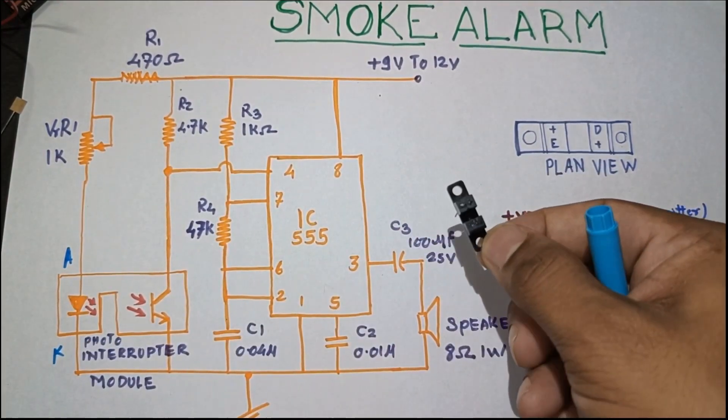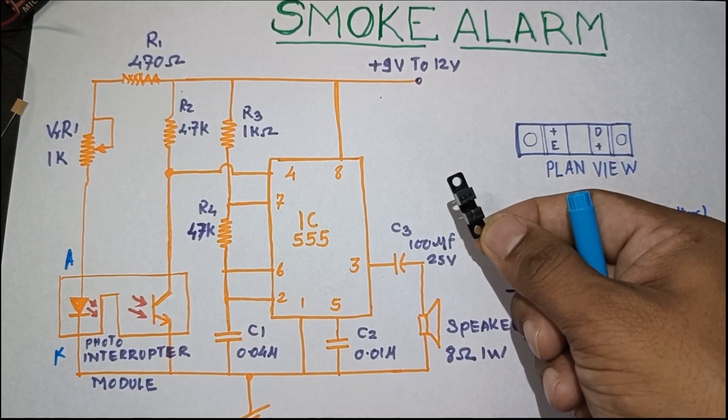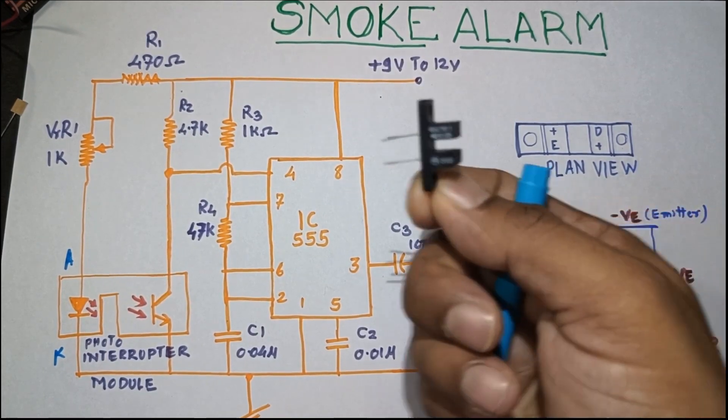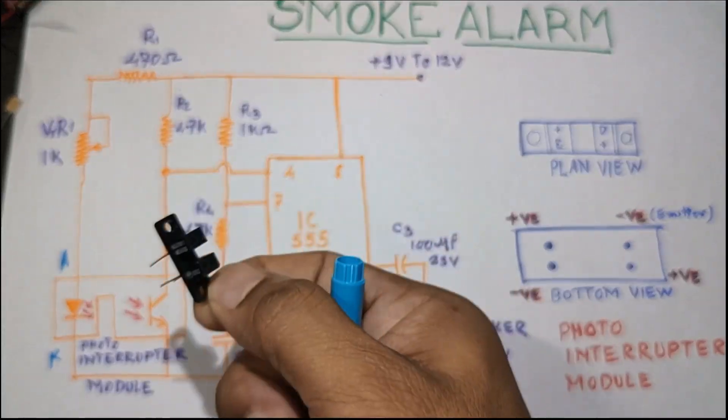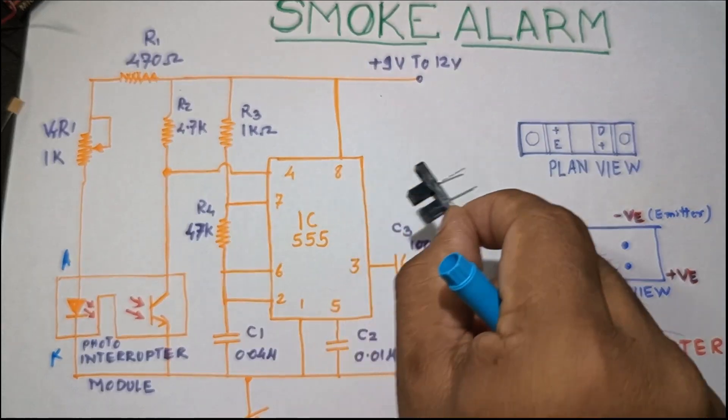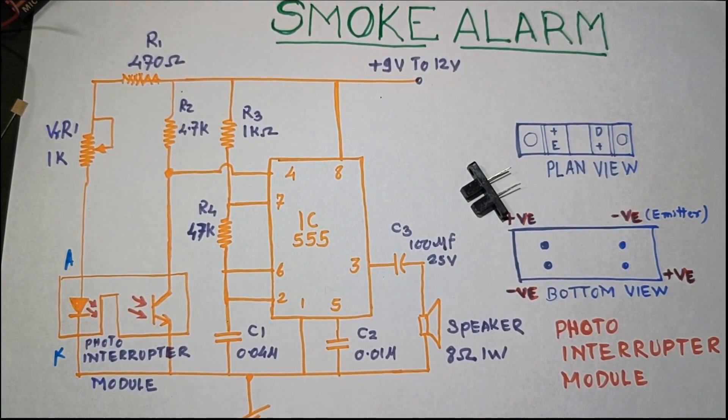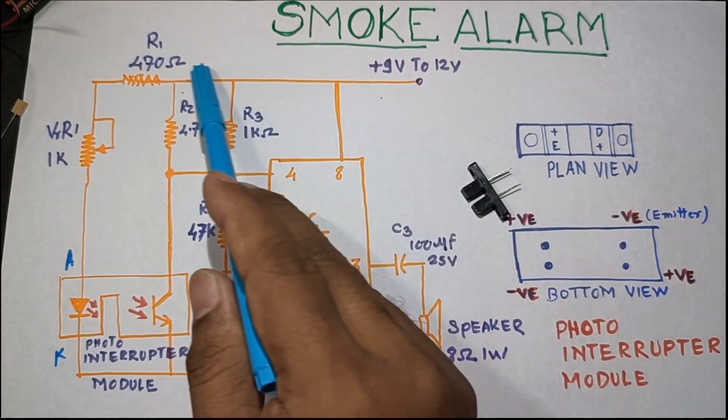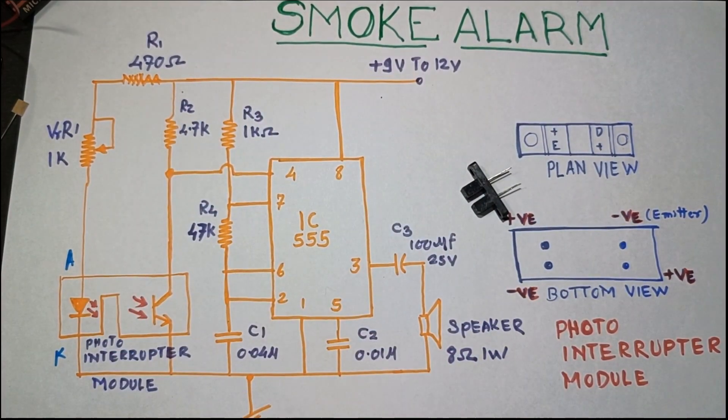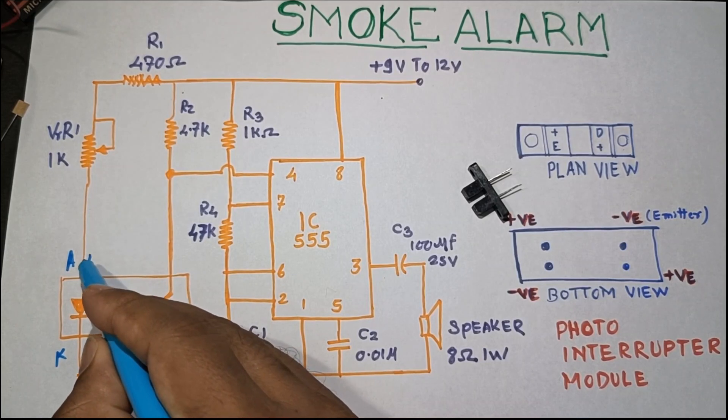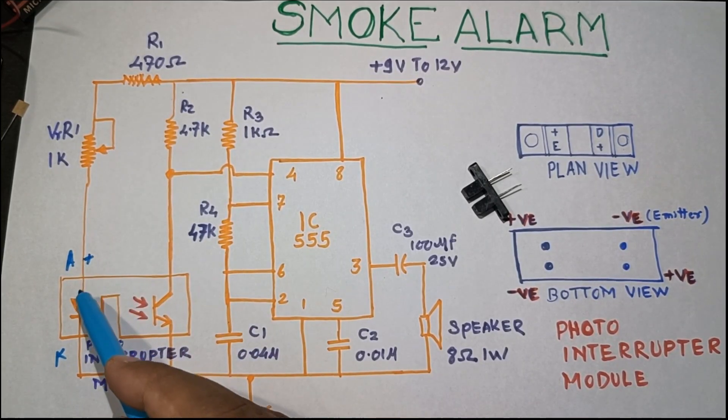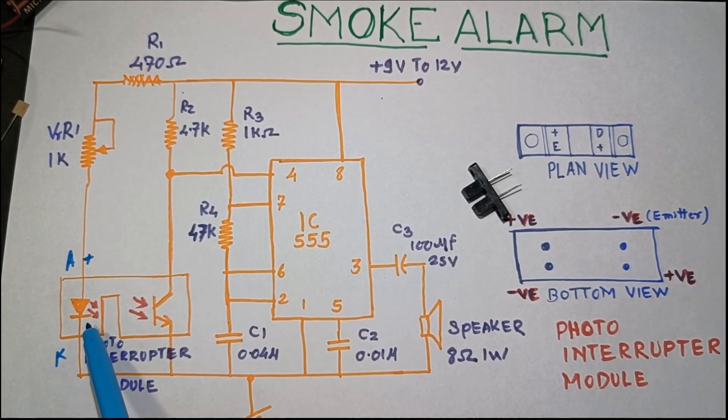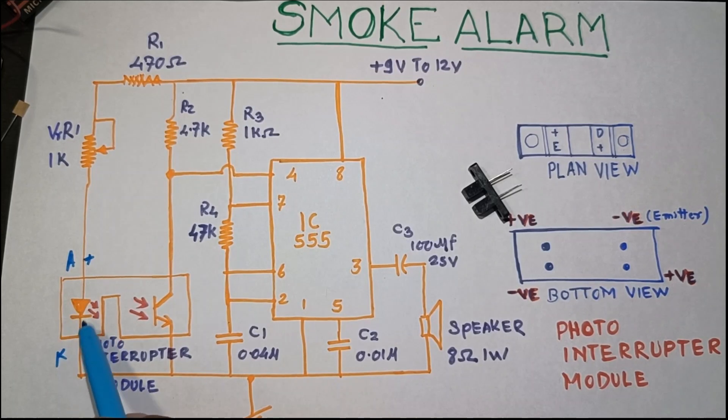This is a simple sensor which is known as a photo interruptive module. When we turn on the power supply, the current is flowing from here and it is coming towards the anode and cathode. When the current is flowing from this anode to cathode, the light of this internal LED is falling on a photo transistor.